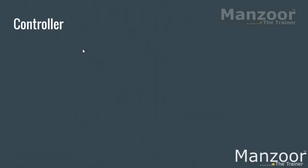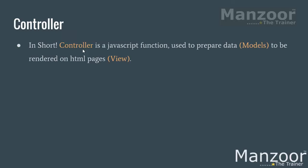Next is the controller. As I told you, a module will have a set of controllers, similar to classes. In JavaScript, a function is a controller — that's it, we write JavaScript functions. In simple terms, a controller is a JavaScript function and its job is to prepare models that should be rendered on the pages — the views. So you have the MVC concept here; the job of the controller is to prepare models that should be rendered on the HTML page.